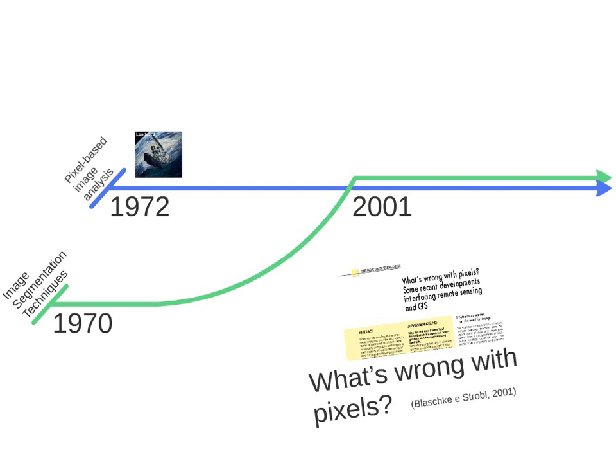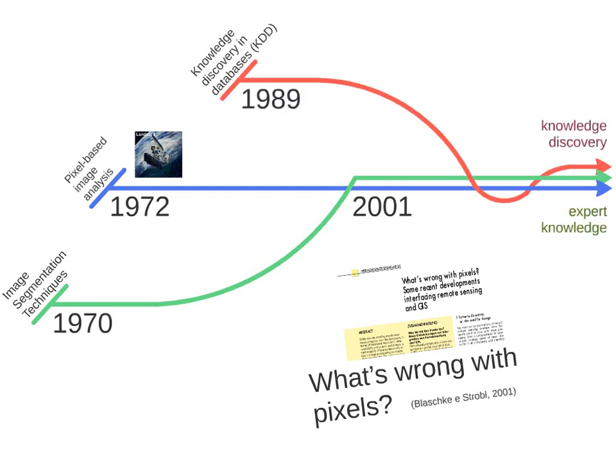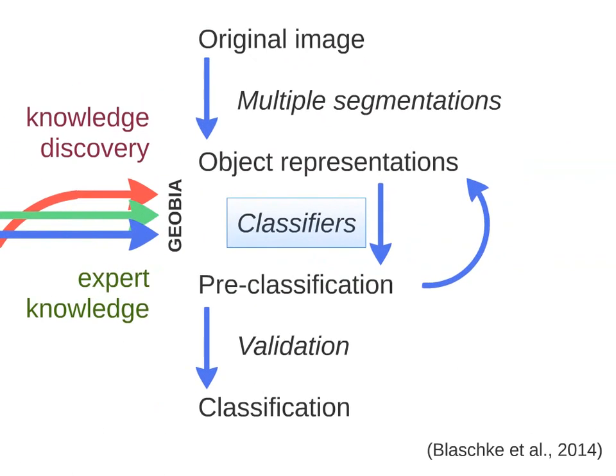Another research area which is very important in science is knowledge discovery in databases, which dates from 1989. These techniques of knowledge discovery, integrating data mining algorithms and pattern recognition techniques, are kind of surrounding the GEOBIA paradigm. Today, some works also use knowledge discovery to make inferences. So, by gathering knowledge discovery and expert technology, we get the GEOBIA technique.